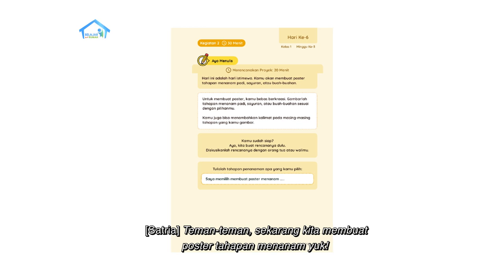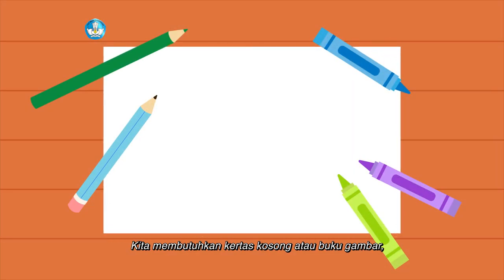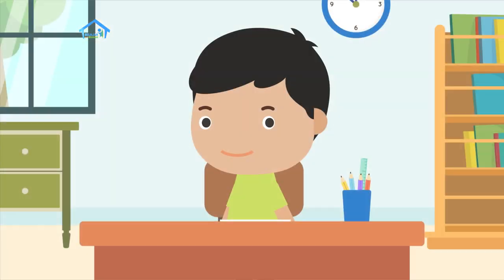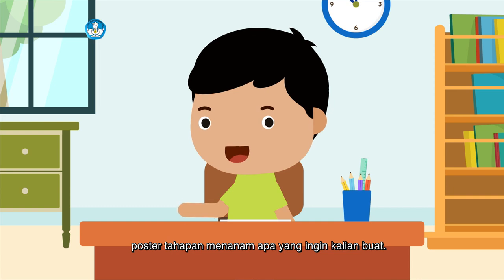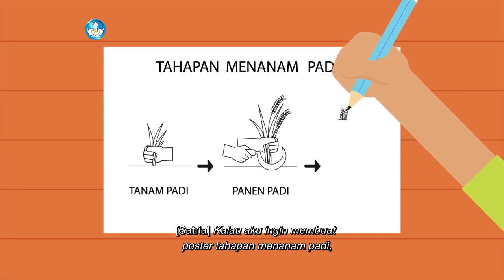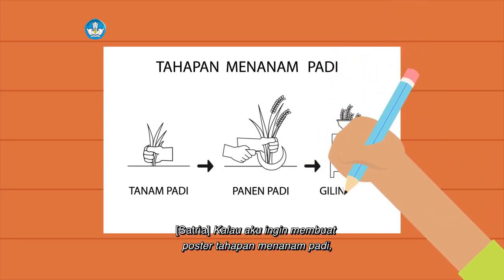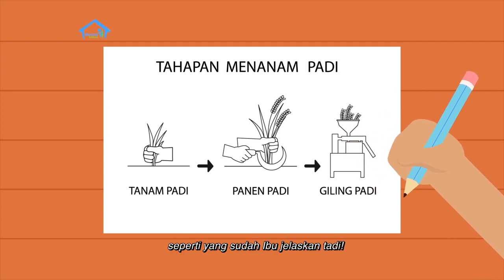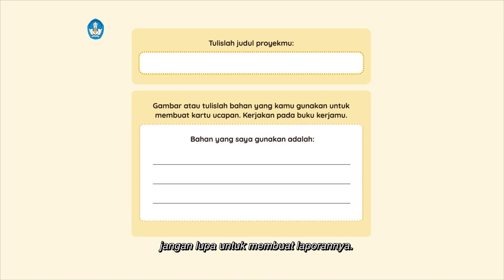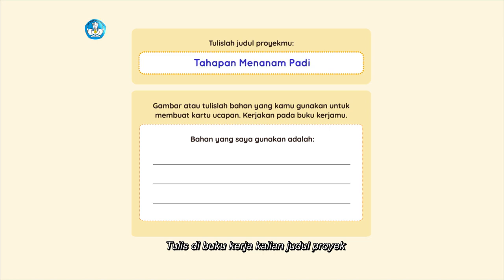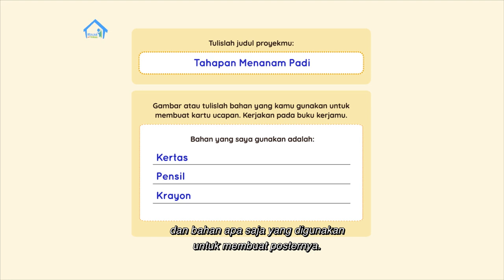Teman-teman, sekarang kita membuat poster tahapan menanam yuk. Kita membutuhkan kertas kosong atau buku gambar, pensil, lalu pensil warna atau crayon. Kalau semuanya sudah siap, kalian tentukan poster tahapan menanam apa yang ingin kalian buat. Kalau aku ingin membuat poster tahapan menanam padi, seperti yang sudah ibu jelaskan tadi. Setelah kalian selesai membuat poster, jangan lupa untuk membuat laporannya. Tulis di buku kerja kalian judul proyek dan bahan apa saja yang digunakan untuk membuat posternya.